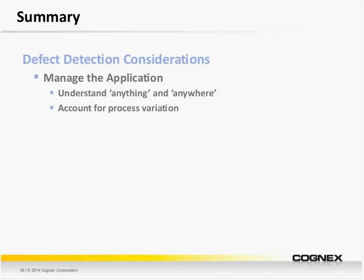That concludes the application examples. I hope walking through the applications has given you a good idea of some of the sorts of defects we can solve and how we can solve them despite their challenges. To summarize: first, manage the application — many defect detection applications are challenging because you're looking for anything, anywhere. You want to understand what 'anything' is and what it looks like. Also, as you've seen with the examples shared, you'll want to understand the process variation. In many applications, the devil's in the details and you may need to account for these.